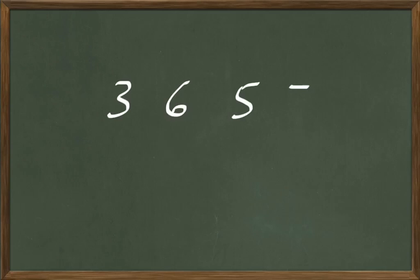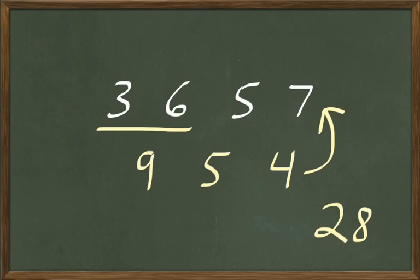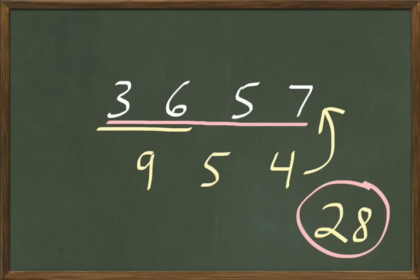Let's do another one: 3 and 6 less 5 multiplied by 7. How many are 3 and 6? 3 and 6 are 9. How many are 9 less 5? 9 less 5 are 4. And 4 multiplied 7 times? 7 times 4 are 28. So 3 and 6 less 5 multiplied by 7 are 28.